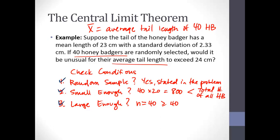When you're doing homework problems involving checking conditions, which we'll do frequently over the next chapters, do not just write out the conditions and put a check mark. It's very important to say why the condition checks out. Something as simple as what we've done here is totally fine — for random sample, just write 'yes, stated in the problem.' Give some reasoning instead of just putting check marks. Make sure to give justification for why you're saying the conditions check out.